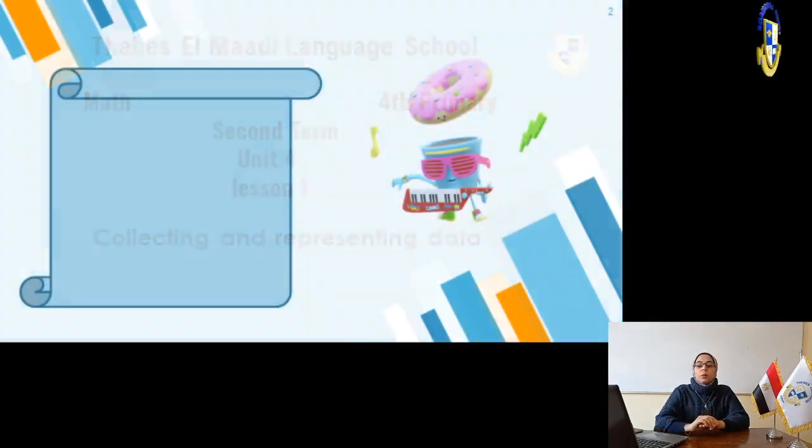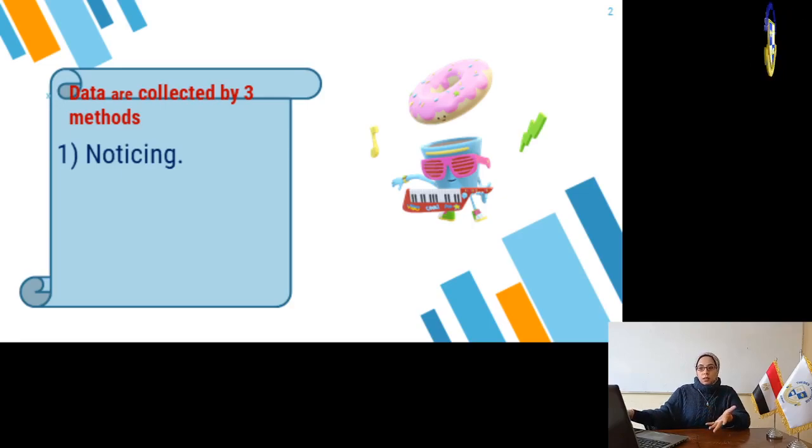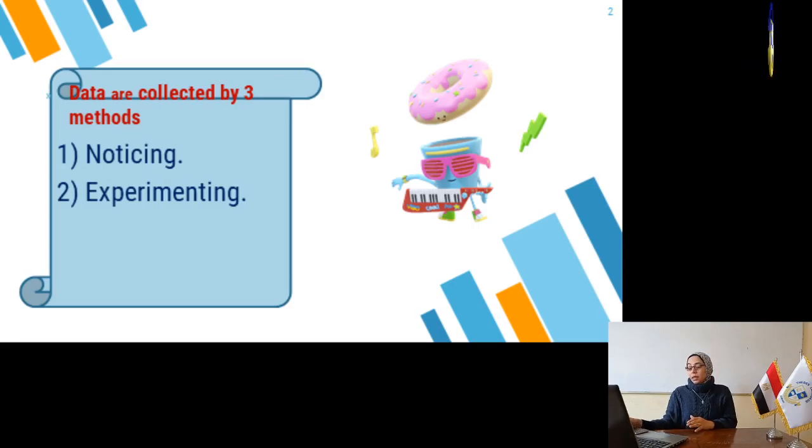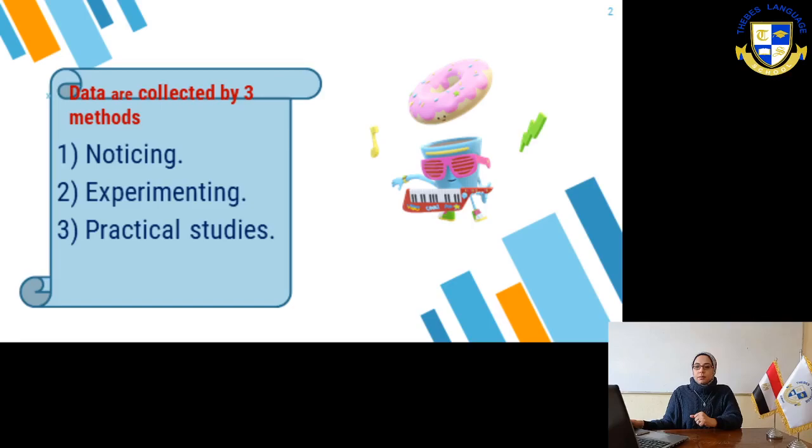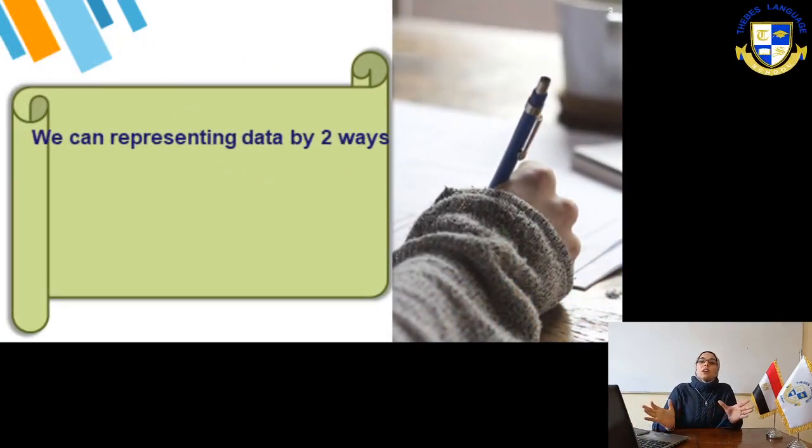At first, we have three methods to collect data. The first method is Noticing - we must notice an event to record or to make a representing data for it. Then, Experiment - we must make an experiment to make a representing data or graph for it. Third method, Practical Studies. So, the three methods of collecting data are Noticing, Experiment, and Practical Studies.